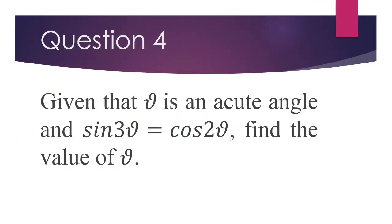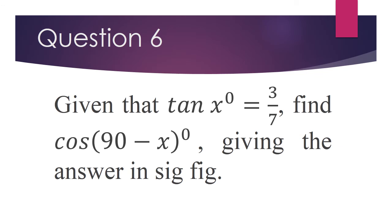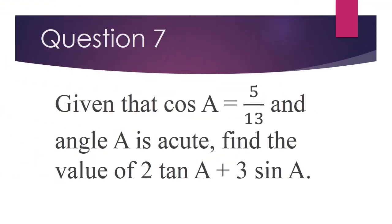Question 4: Given that theta is an acute angle and sin 3 theta is cos 2 theta, find the value of theta. Question 5: Given that sin(x + 60) is equal to cos 2x, find tan(x + 60). Question 6: Given that tan x is 3 over 7, find cos(90 − x), giving the answer in significant figures. Question 7: Given that cos a is 5 over 13 and angle a is acute, find the value of 2 tan a plus 3 sin a.